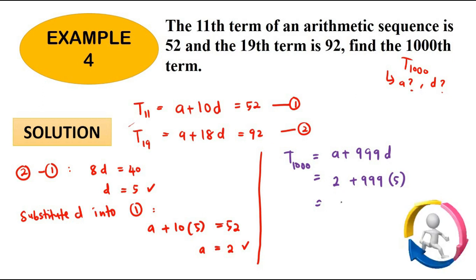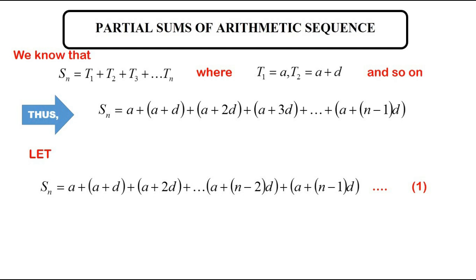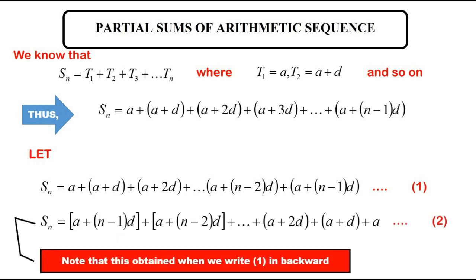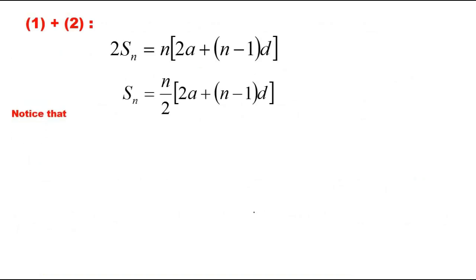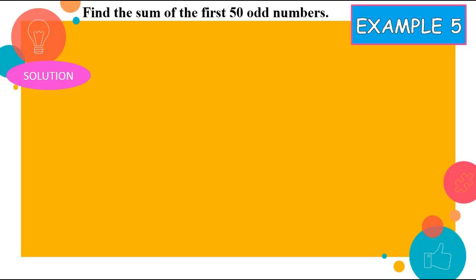So recap a bit about the partial sums of arithmetic sequence. We know that Sn is T1 plus T2 up until Tn, where our T1 is a, our T2 is a plus d and so on. So now we want to prove how to get the formula for the partial sums. If we rewrite this again in backward, we would have that. And then what will happen if we plus them together, we would have this as the form. So later on this is how they got the formula for that. And since our Tn is a plus n minus 1d, so we can actually simplify this further, which this one is our l at the same time.